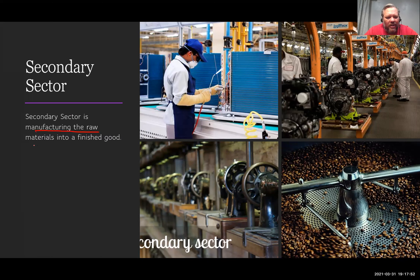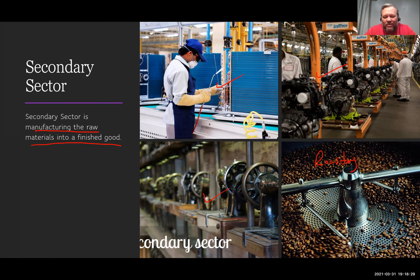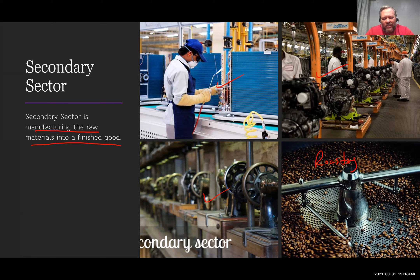The secondary sector is the manufacturing of raw materials into a finished product. Examples include assembly lines, computer manufacturing, sewing machines, and roasting coffee beans into a finished product. We've seen manufacturing shift around the world — 50 years ago China wasn't the biggest manufacturer, but today they manufacture a huge amount. The US still actually ranks second behind China.